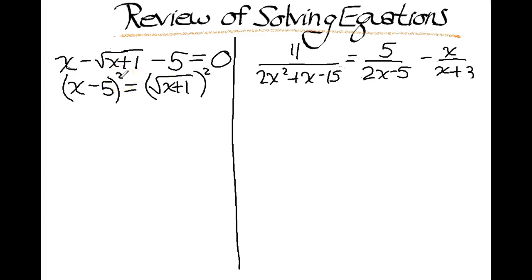Step three is then to go ahead and foil or multiply things out. The left hand side has to be foiled because it is a binomial that we're squaring. So we get x squared minus 10x plus 25 and that's going to equal x plus 1. And then we notice that this polynomial has degree 2. The highest coefficient is 2.